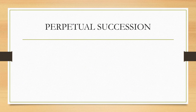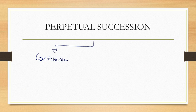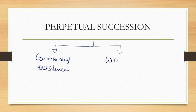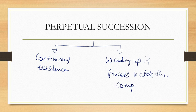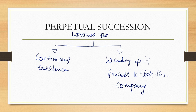The next feature is perpetual succession. A company never dies — it will only be wound up by law. A company has continuous existence. It is not like a human being who dies; the company will not die until it is wound up. Winding up is the process to close the company, so if we don't do winding up, the company will live forever — that means it will have perpetual succession.